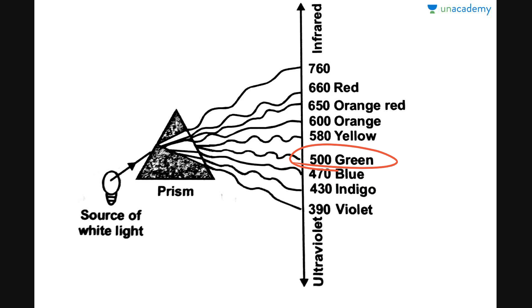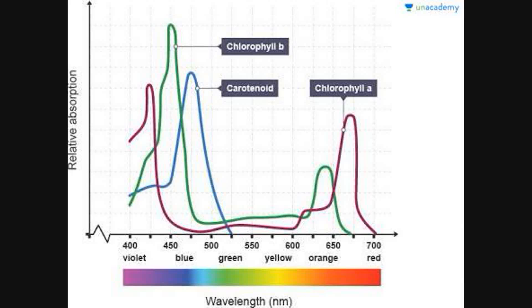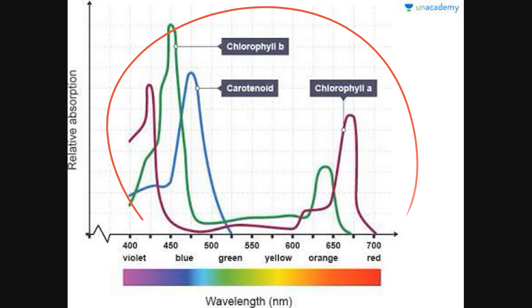Depending on the percentage of absorption by the various pigments — which include chlorophyll A, chlorophyll B, xanthophylls, and carotenoids — each of these pigments has different absorption powers. That is, they absorb light of different wavelengths, and depending on this phenomenon of absorption of different wavelengths of light by the various pigments, an absorption spectrum is formed.